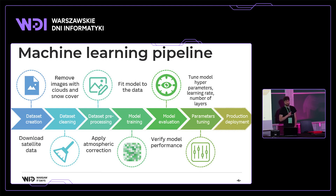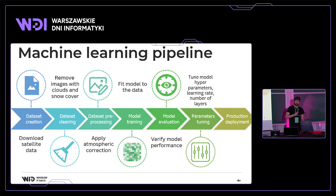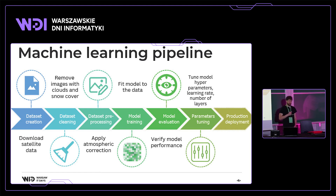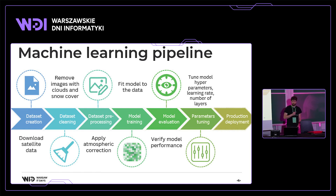Then, of course, there is model training — the place where machine learning happens — followed by model evaluation, where we verify the performance of the model. Then parameter tuning: we can change the number of layers, type of layers, learning rates, loss function, and so on. After parameter tuning, we train the model again and evaluate — it's a closed loop. We do it until we are happy with results or until we give up. And if the project assumes deployment, the last stage is the deployment phase.